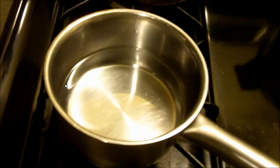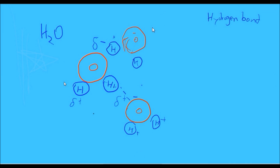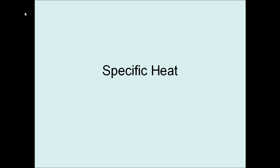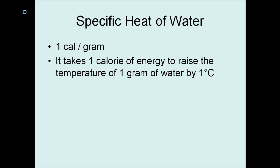Water also has the ability to absorb a lot of heat without making a significant change in its temperature. Remember the weak hydrogen bonds holding individual water molecules together — any heat has to be absorbed breaking up those hydrogen bonds before it can cause the molecules to move and increase temperature. There may be billions of these hydrogen bonds, so it takes a lot of energy just to get water to warm up. This necessary energy is called the specific heat — the energy required to increase the temperature of one gram of a substance by one degree Celsius. The specific heat of water is one calorie per gram.